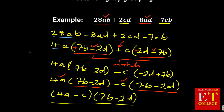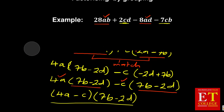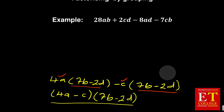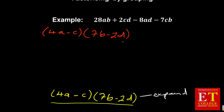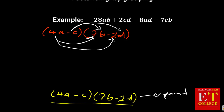There is a way of proving if your answer is correct — we prove by expansion. You expand the final answer and check that it matches the original. So we rewrite: (4A minus C) multiplying (7B minus 2D). When expanding, you take 4A to multiply 7B, then 4A to multiply negative 2D, then negative C to multiply 7B, and finally negative C to multiply negative 2D.